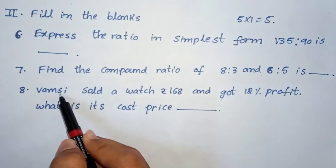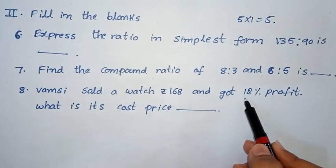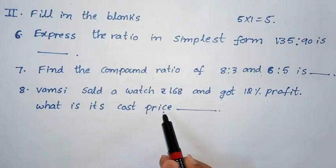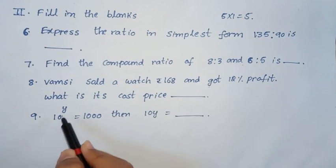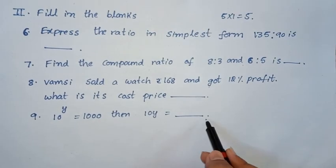Eighth question, once she sold a watch, 168 rupees and got 12% profit, what is its cost price? Ninth question, 10 power y equal to 1000, then 10 y equal to dash.